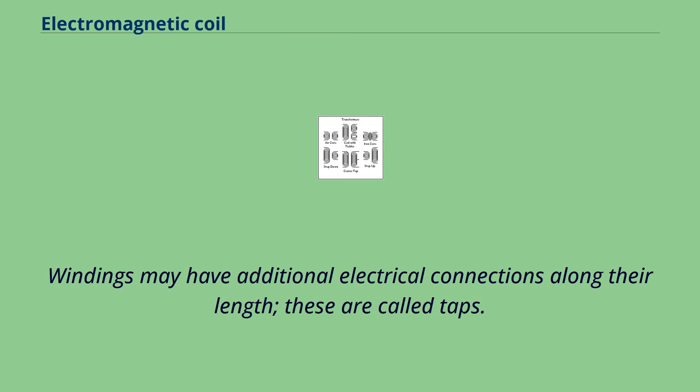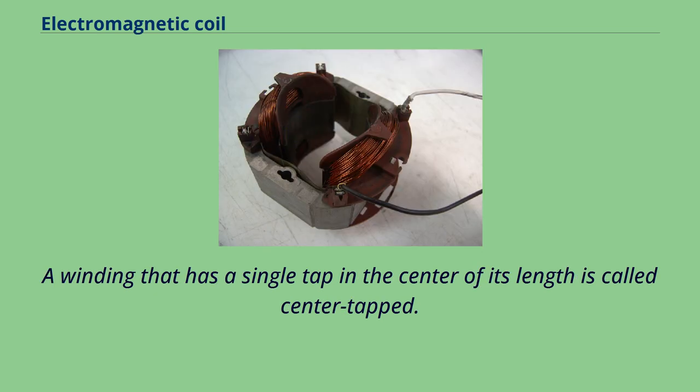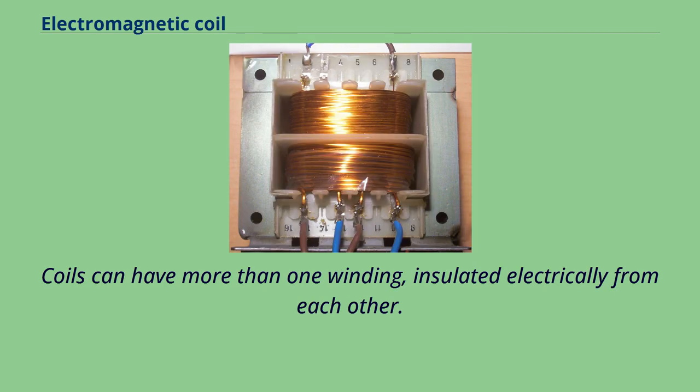Windings may have additional electrical connections along their length; these are called taps. A winding that has a single tap in the center of its length is called center tapped. Coils can have more than one winding, insulated electrically from each other.